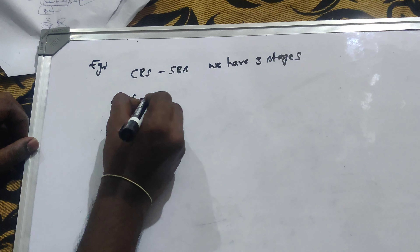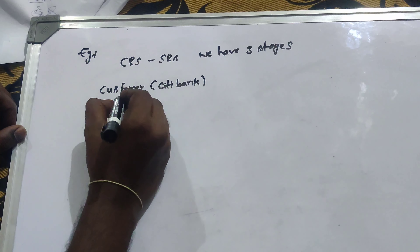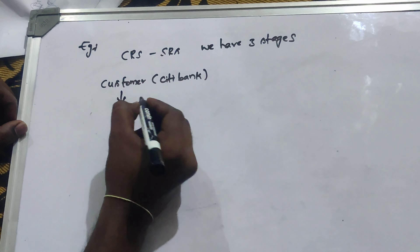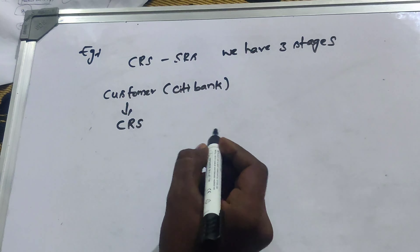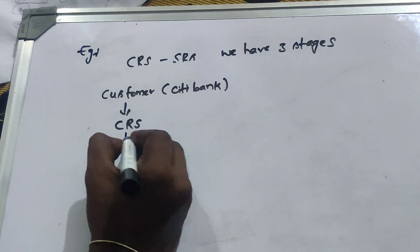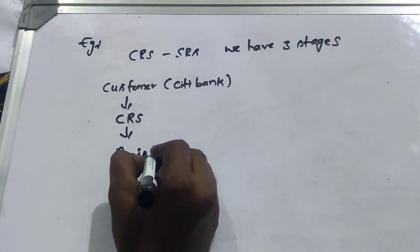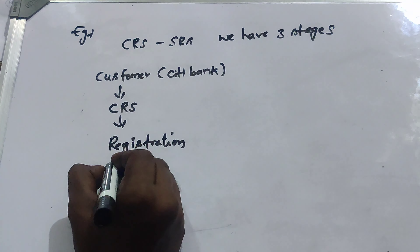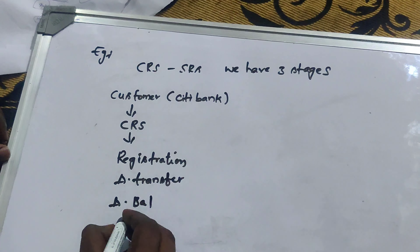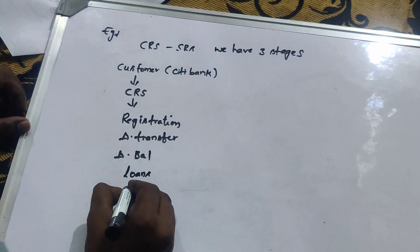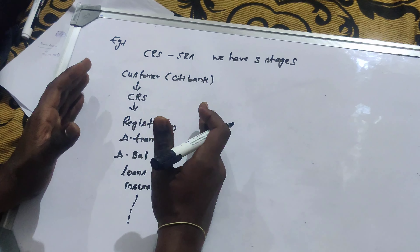We have a customer with CT Bank. CT Bank has given CRS. The customer has given requirements — that is Customer Requirement Specifications — like registration, amount transfer, amount balance, loans, and insurance, and so on. These are CRS in business language.